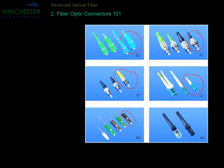The MU connector is also a popular smaller connector, similar in size to an LC, which is used mostly in Japan. The MT or MPO connector is actually a multi-fiber connector that can have anywhere from 2 to 64 fibers in one connector. This is gaining popularity, but still not nearly as common as the other connector types.